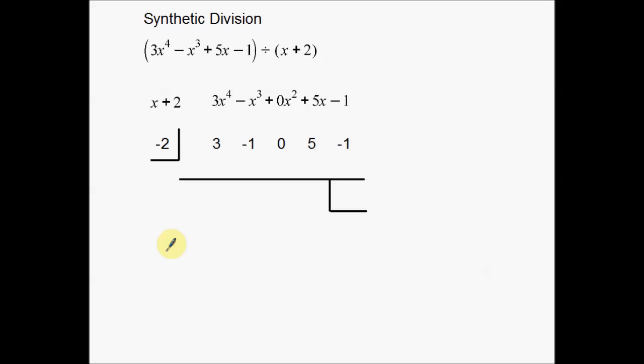The first thing we want to do is identify what we're dividing. In this case we're taking 3x squared minus x to the third plus 5x minus 1 — this four-term polynomial — divided by the linear binomial x plus 2. We want to see what we get when we divide. From the polynomial long division video you know it can get a little hairy, but synthetic division is actually a simpler process. There is a little bit of setup to it though.